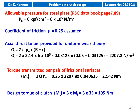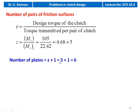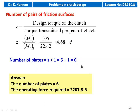The design torque equals MT into 300 percent slip: 3 into 35 equals 105 Newton meter. Number of pairs of friction surfaces Z equals design torque divided by torque per pair: 105 divided by 22.42 equals 4.68, rounded up to 5. Number of plates equals Z plus 1 equals 6. The answer: number of plates equals 6 and operating force required is 2207.8 Newton.